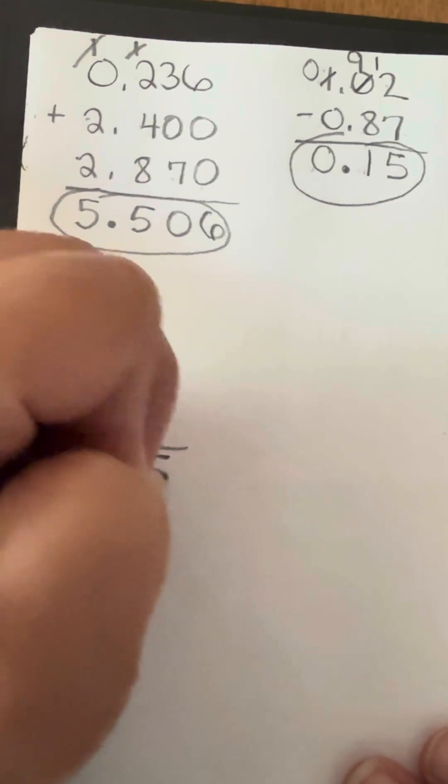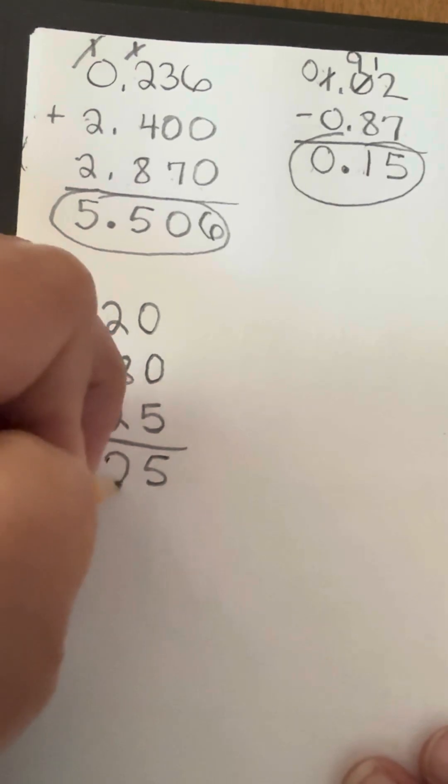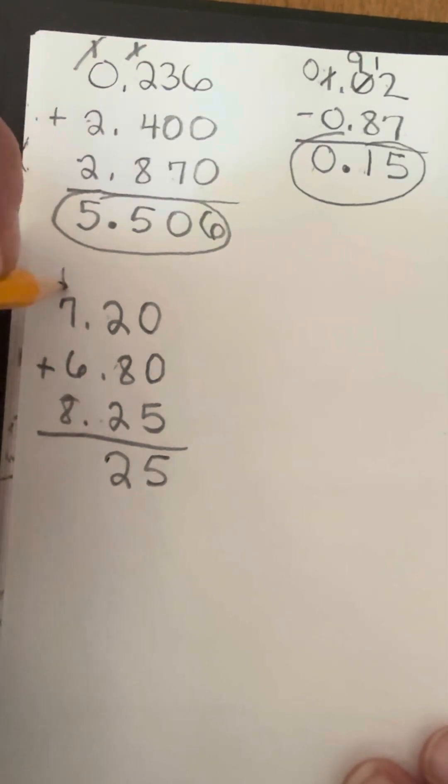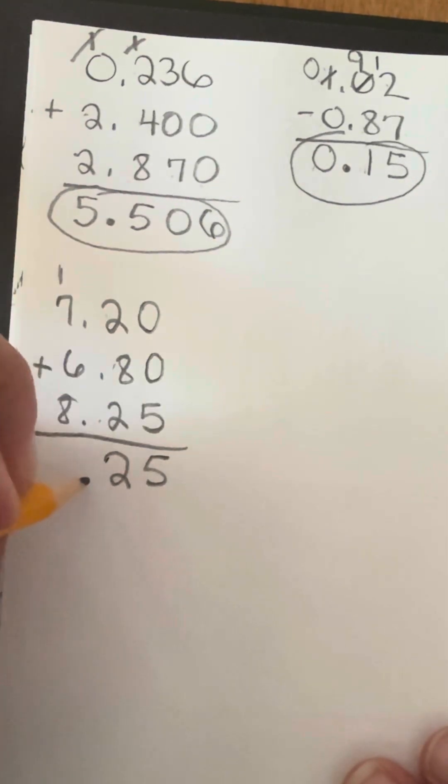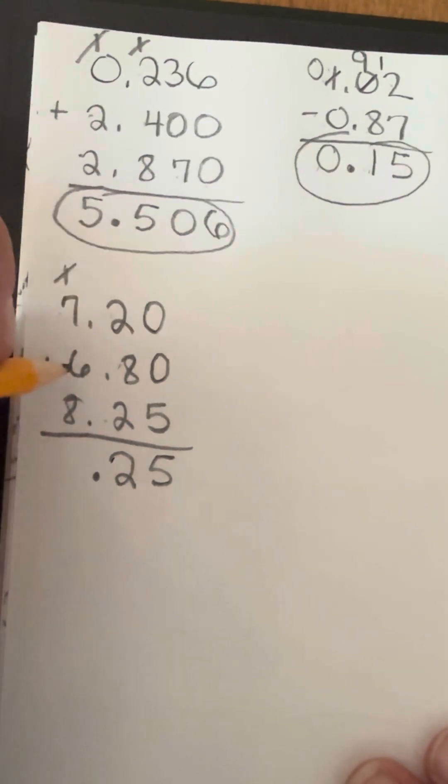0, 0, and 5 is 5. 8 and 2 is 10, plus 2 is 12. So we're going to put a 2 down here. We're going to carry that 1 up on top here. Decimals are going to line up right here. 1 plus 7 is 8, plus 6 is 14, plus 8 is 22.